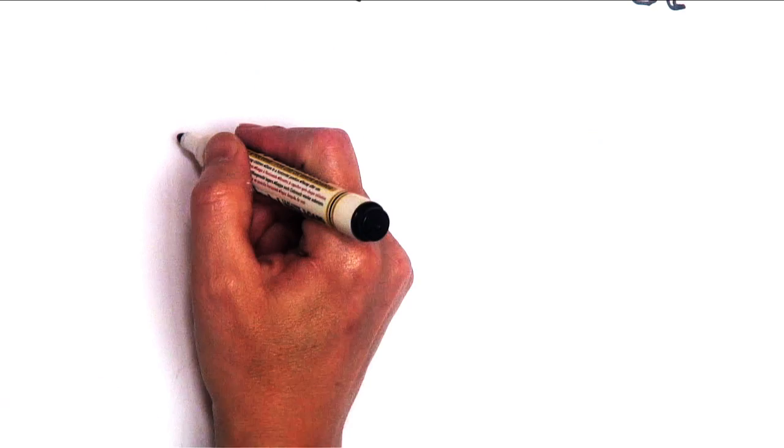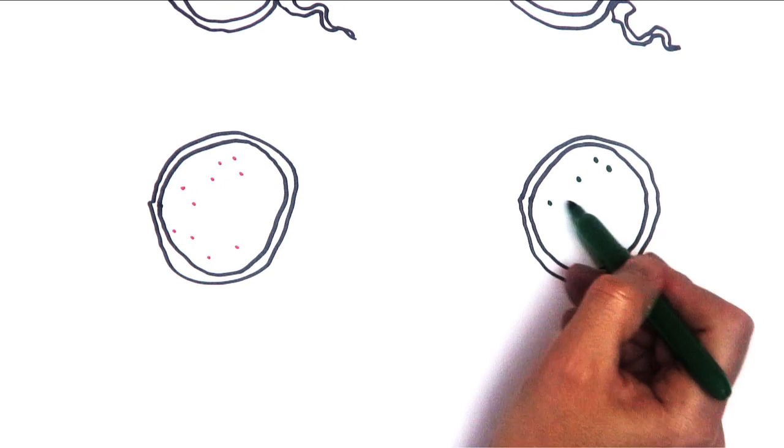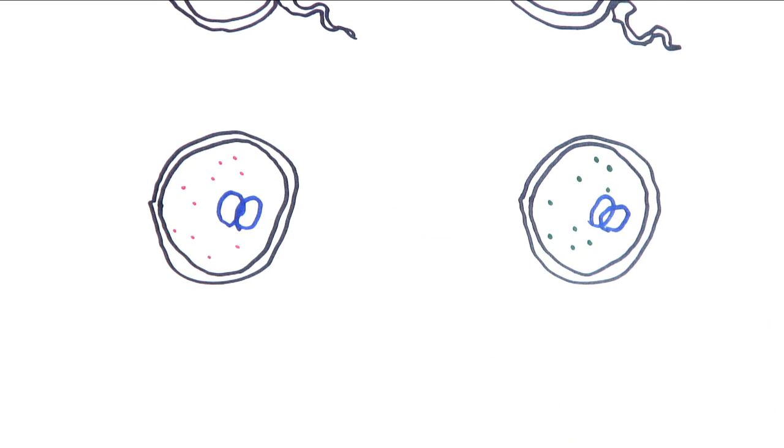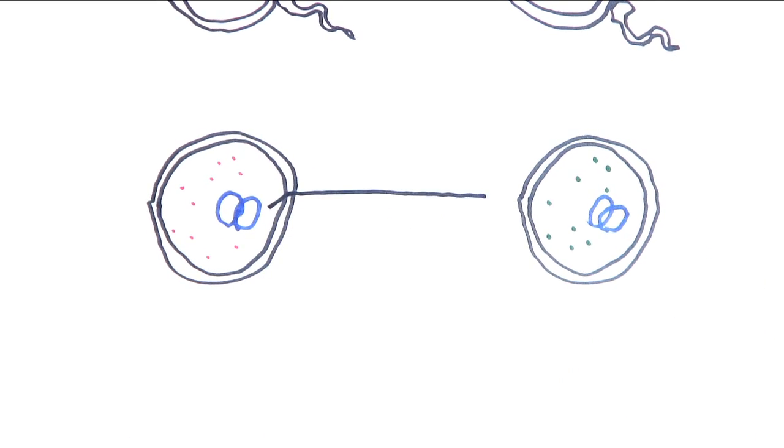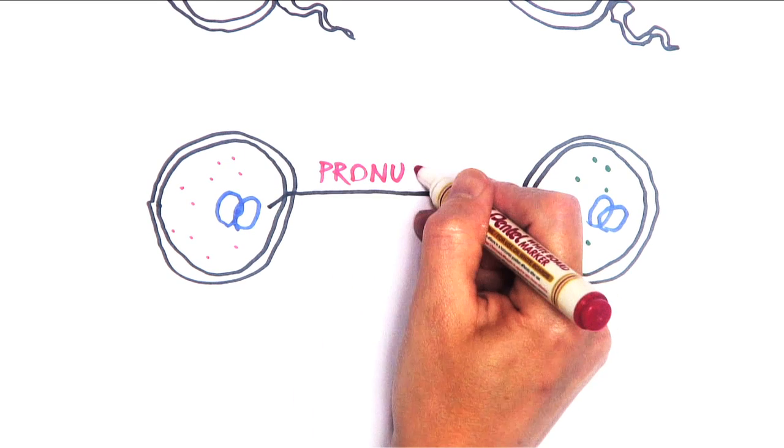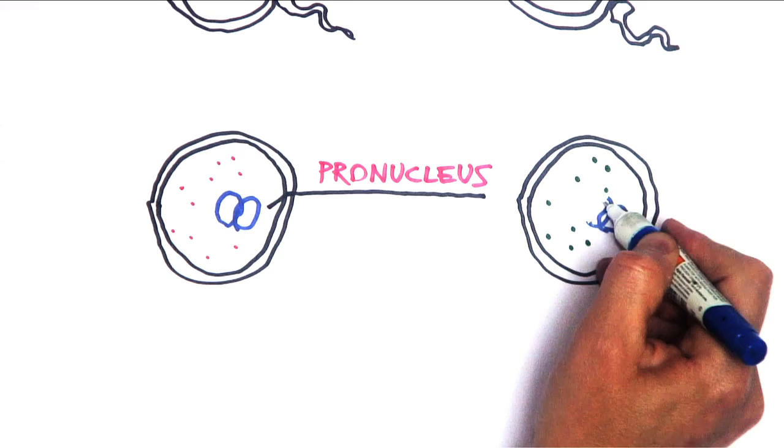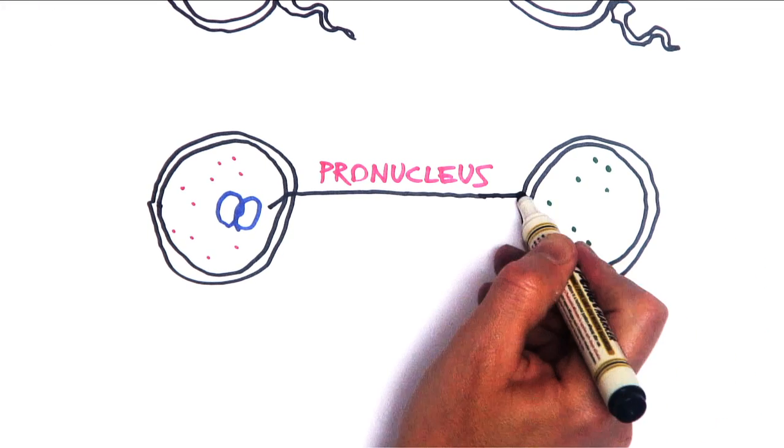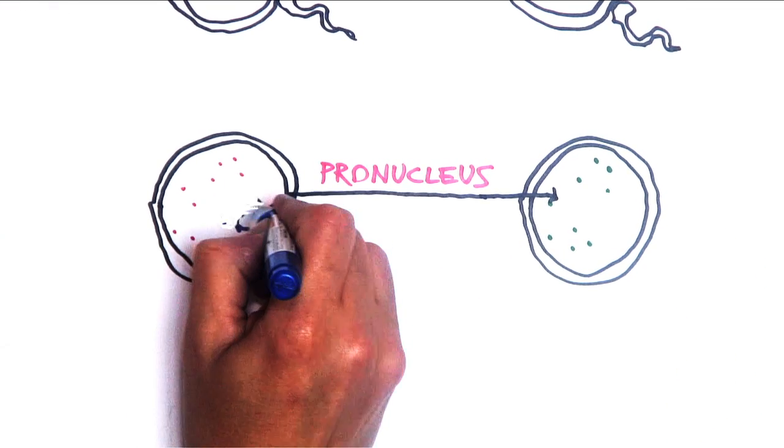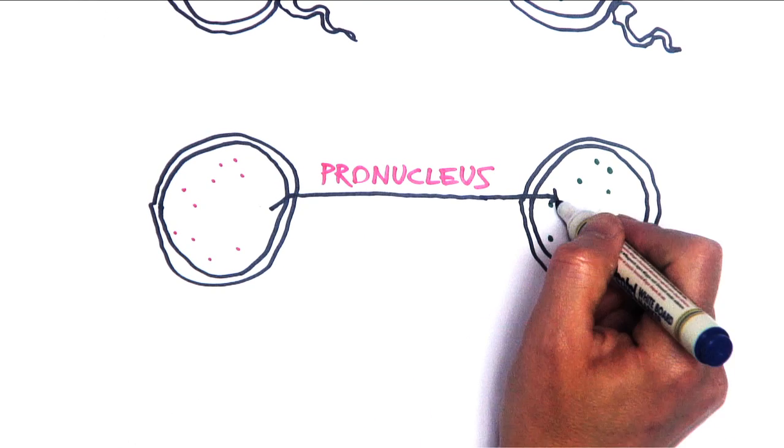When the newly fertilized eggs have become embryos of just a few hours old, the chromosomes from both the egg and sperm will have formed a new parcel called at this stage the pronucleus. You then remove the pronucleus from the donor embryo and replace it with the pronucleus from the intending mother's embryo.